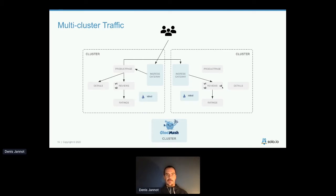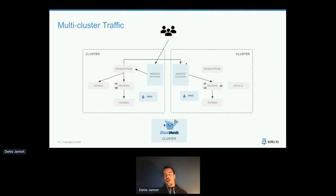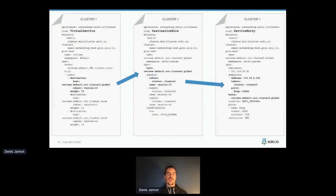What we want is for the product page service to send some requests to the reviews service locally and some to the reviews service on the other cluster to serve v3. Without Gloo Mesh, you'd need to federate identity manually so both clusters share a common root certificate. With Gloo Mesh, you just create what we call a virtual mesh and it federates identity automatically.